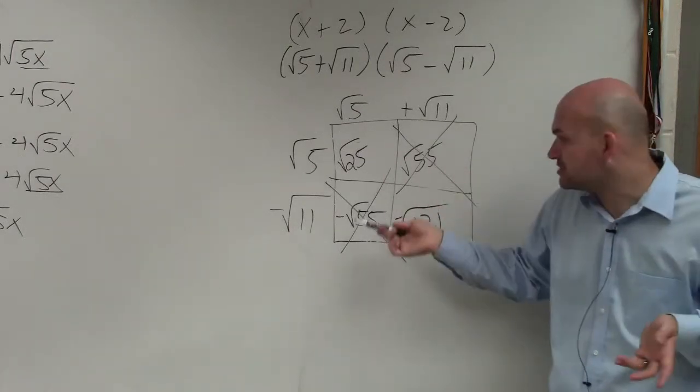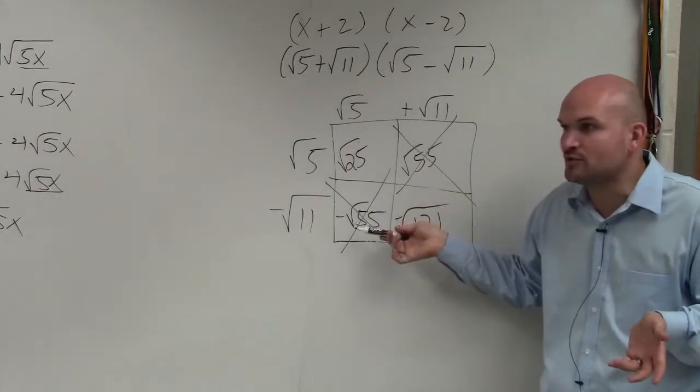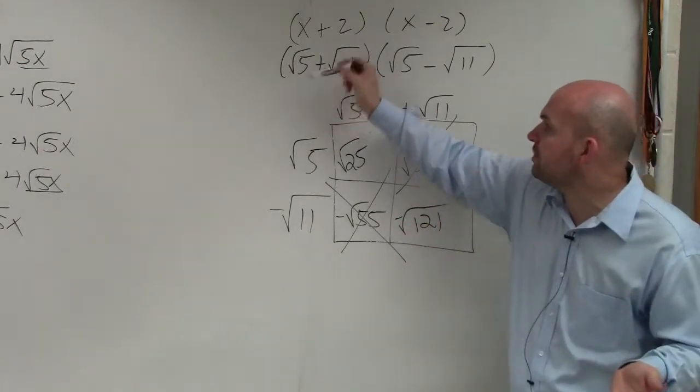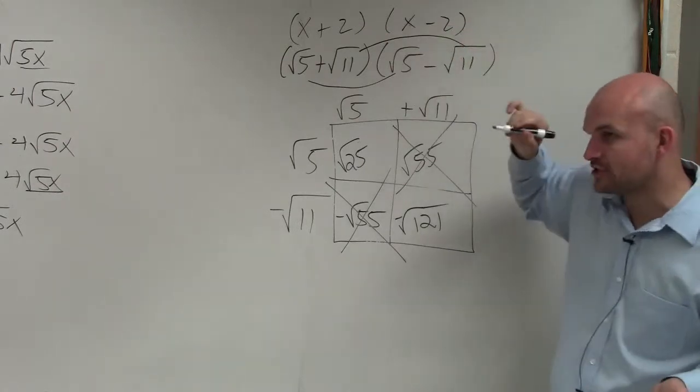So we don't need them anymore. Because what's square root of 55 minus square root of 55? Zero, right? So really, all I had to do was multiply my first two terms and my last two terms.